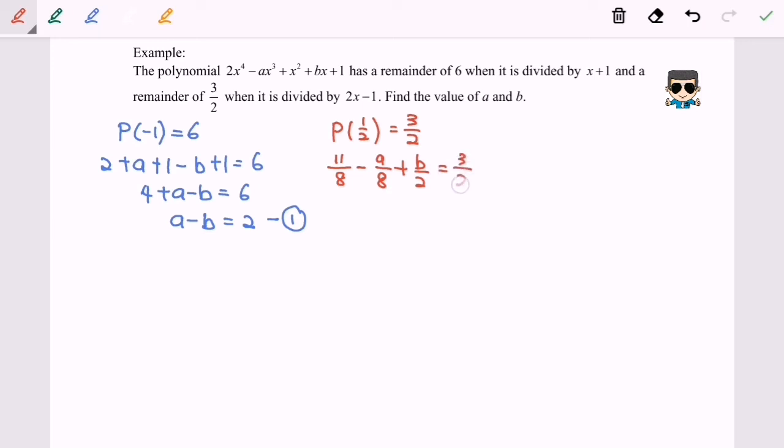Simplify the equation: we will have negative a over 8 plus b over 2, and equals to 1 over 8. I will multiply 8 for both sides, so finally I will have negative a plus 4b equals to 1, which is my second equation. By doing simultaneous equations, my plan is to add equation 1 and 2.